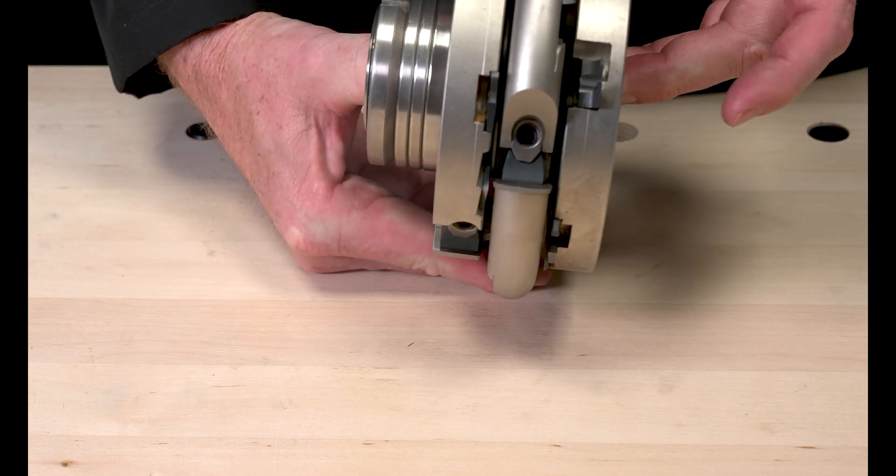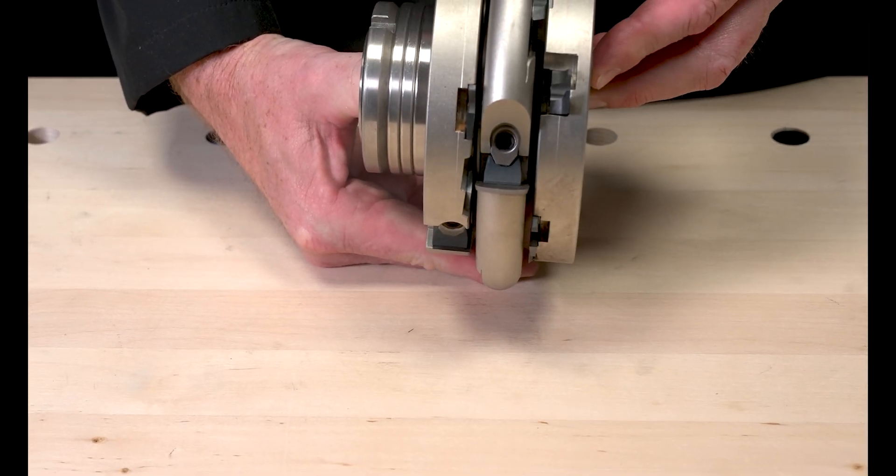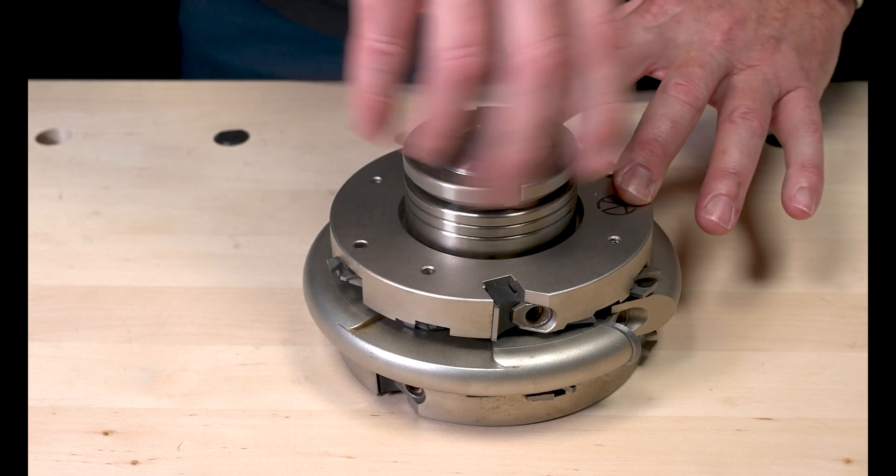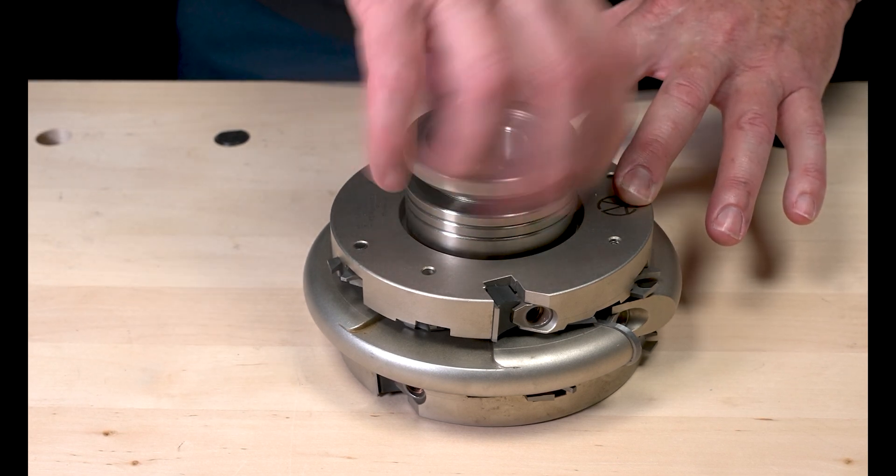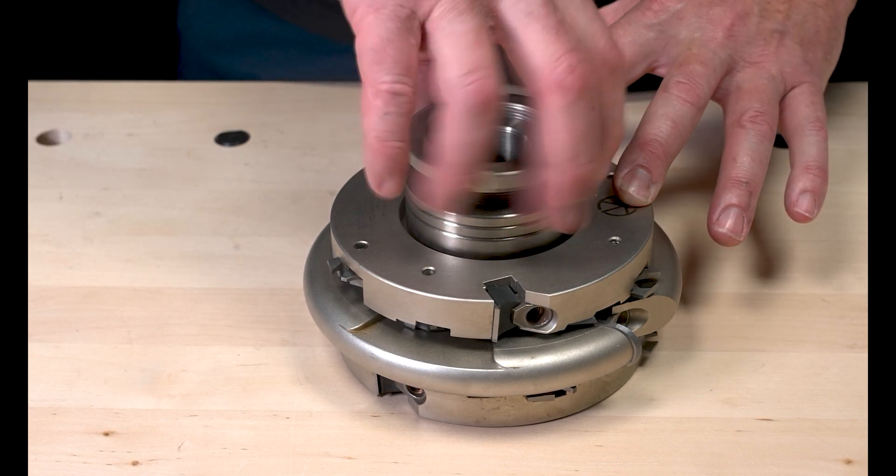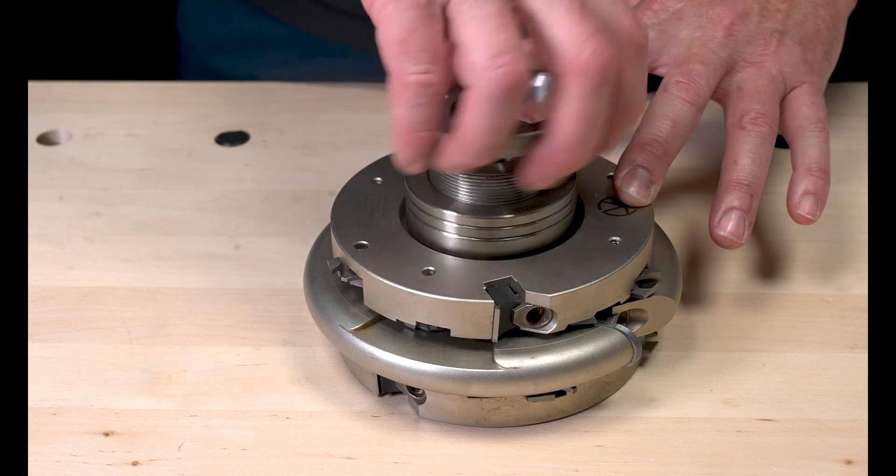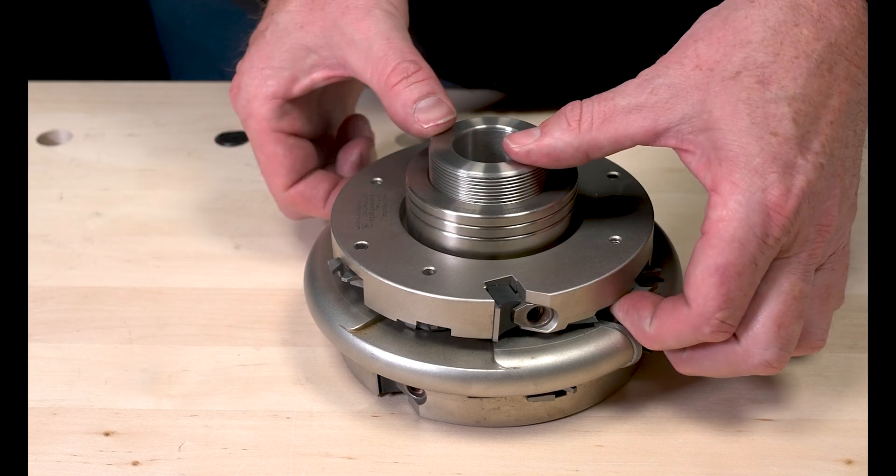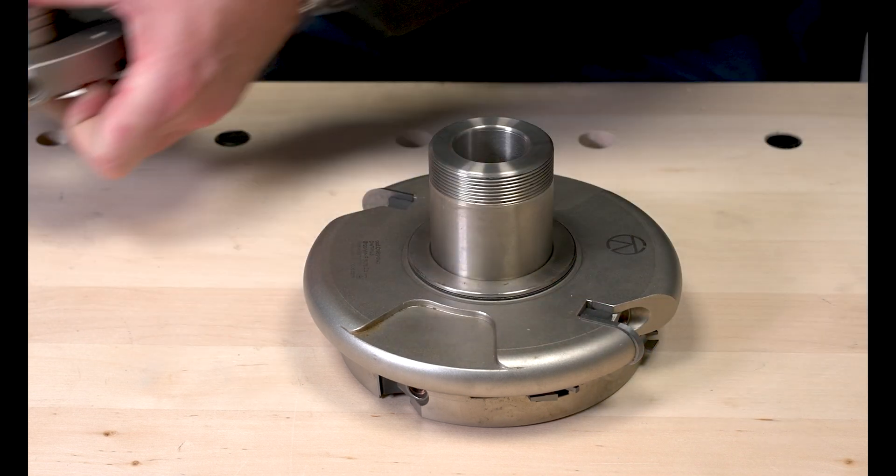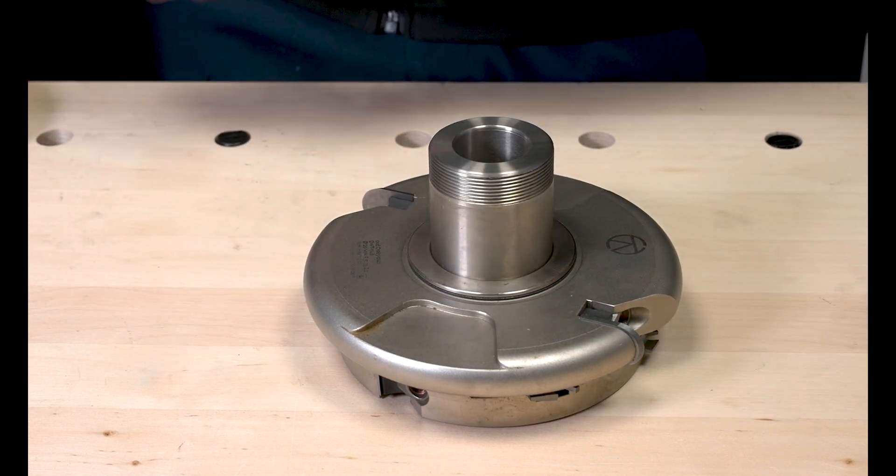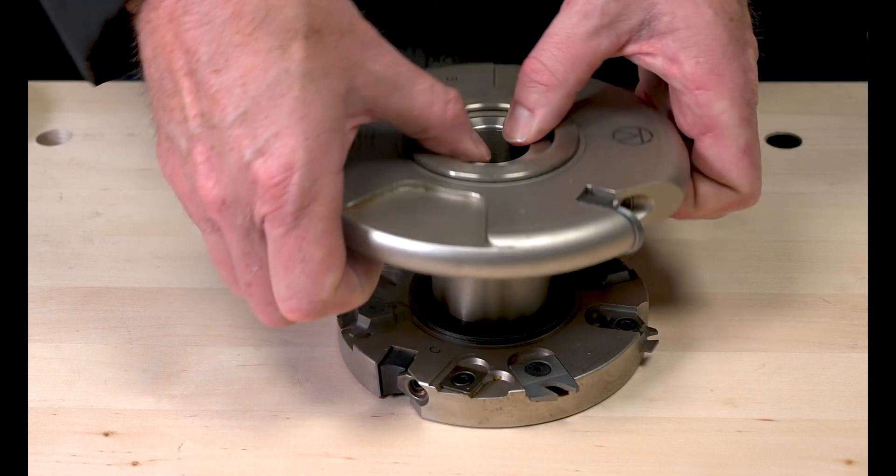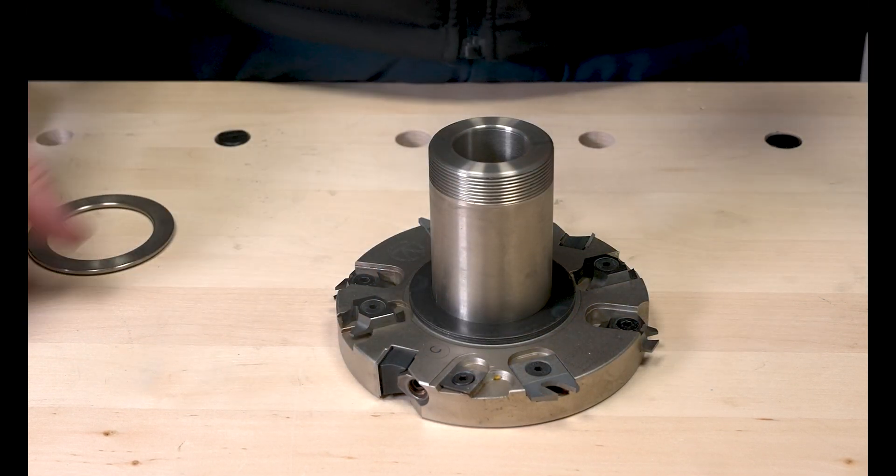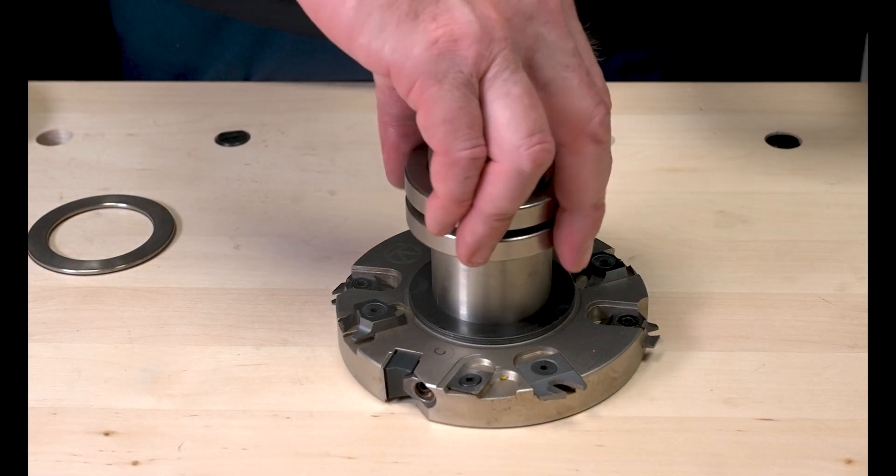So now we're going to change this over from the 45mm with the R10 spiral cutter to just the 45mm. So we're releasing the top nut, removing element A, take out element B.